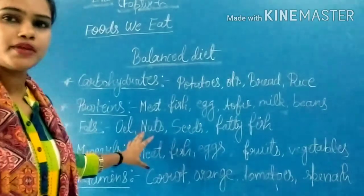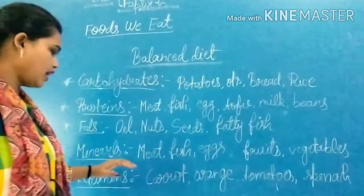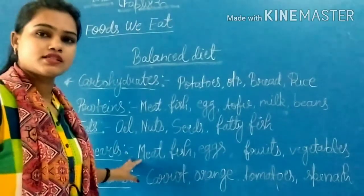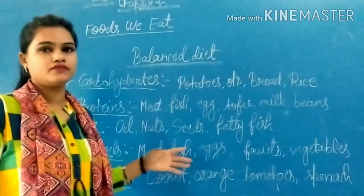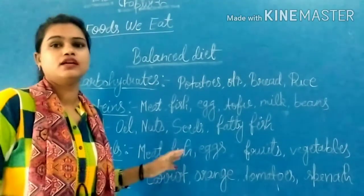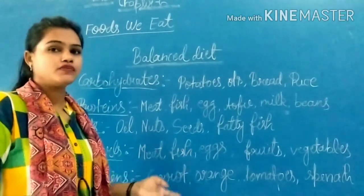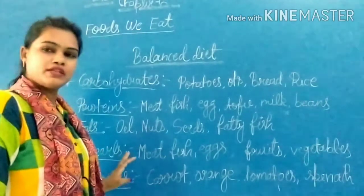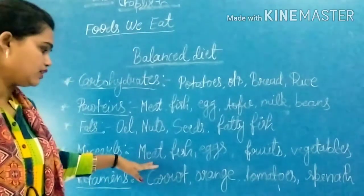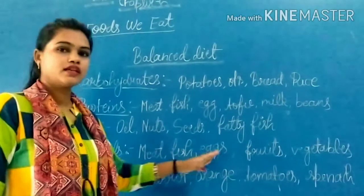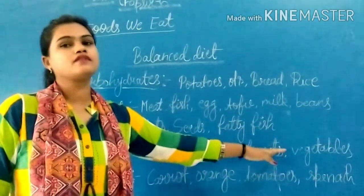And the next one is minerals. Minerals means food from which we get calcium and iron. So what should we eat for minerals? We should eat meat, fish, eggs, fruits, and vegetables.